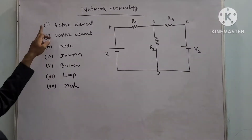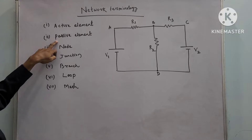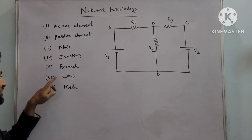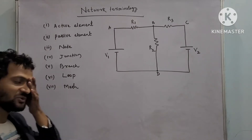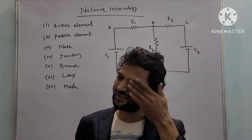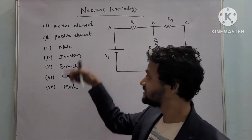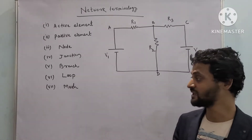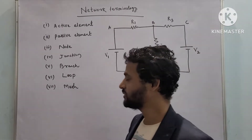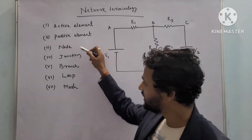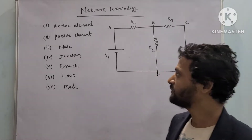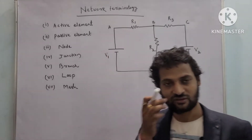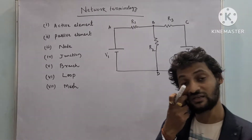First we will discuss about active element, then passive element, node, junction, branch, loop and mesh. In engineering semester, students often get short questions from this section — like what is a passive element with one example, what is the difference between loop and mesh, what is the difference between node and junction, what is active element, what is branch.